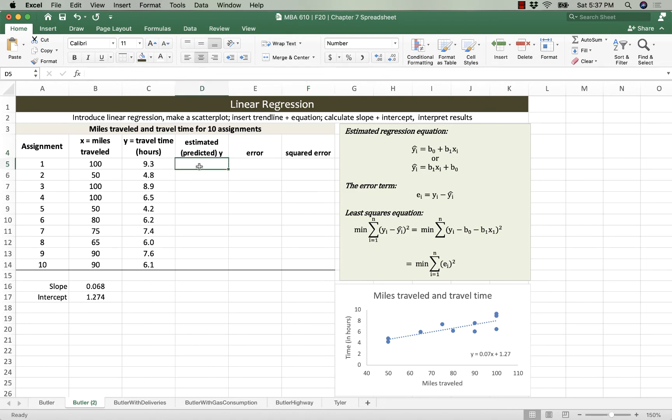So first, I'm going to calculate the predicted value of y. We did this earlier, but we can predict the amount of time it's going to take based on miles traveled. So our prediction is equal to the intercept plus the slope, I'm using absolute values on both of those, absolute references, multiplied by the miles traveled, our x value, 8.1. So, for 100 miles traveled, the point on the regression line corresponds to a y value of 8.1 hours time traveled.